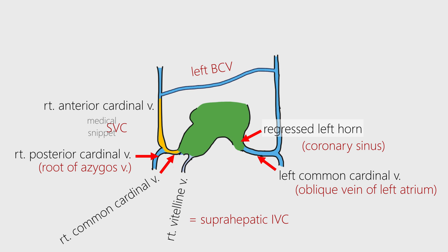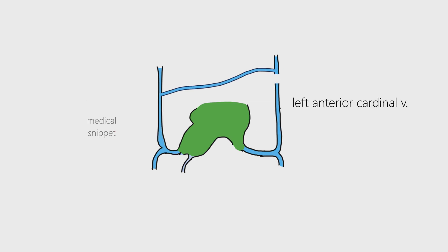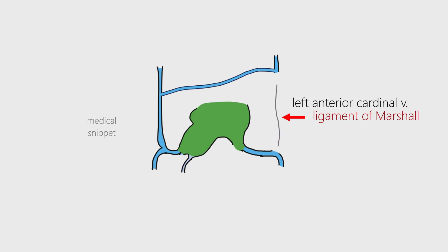Now our topic of interest comes. The left anterior cardinal vein normally regresses and becomes the ligament of Marshall. When the left anterior cardinal vein persists, it forms the persistent left superior vena cava. This is how the left superior vena cava is formed.